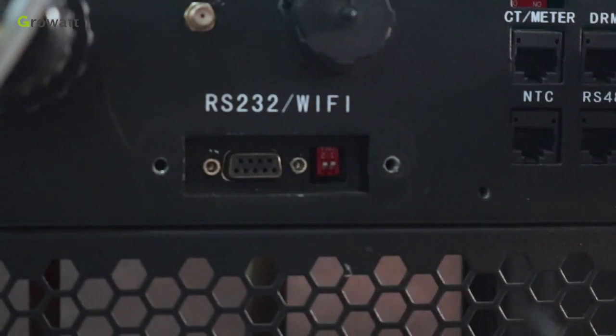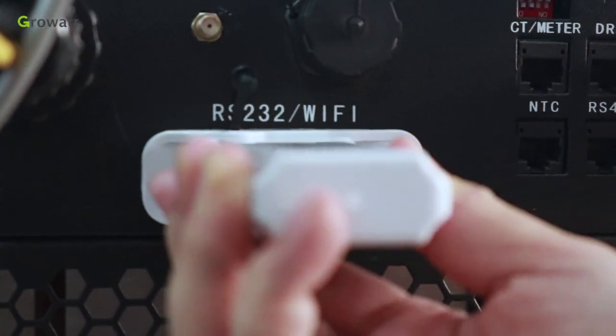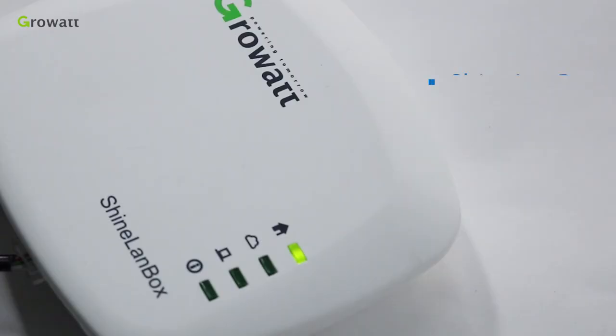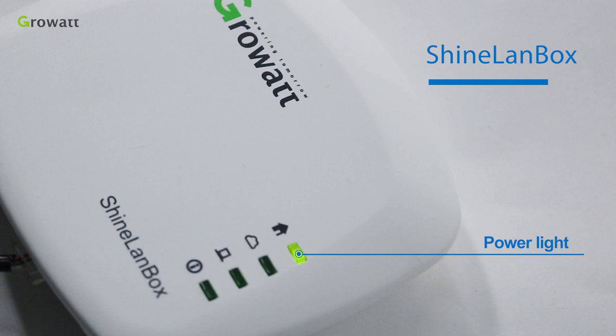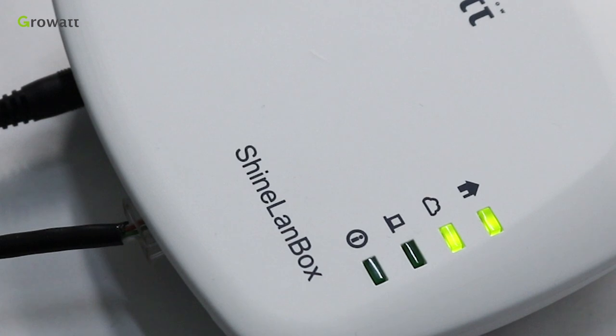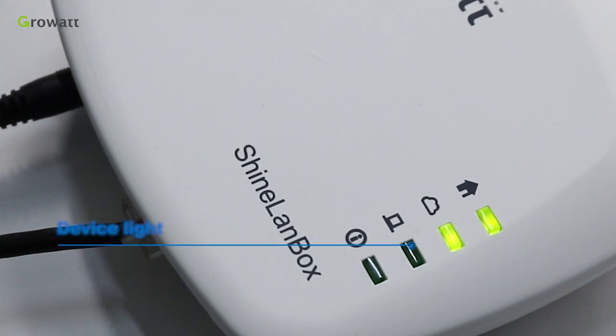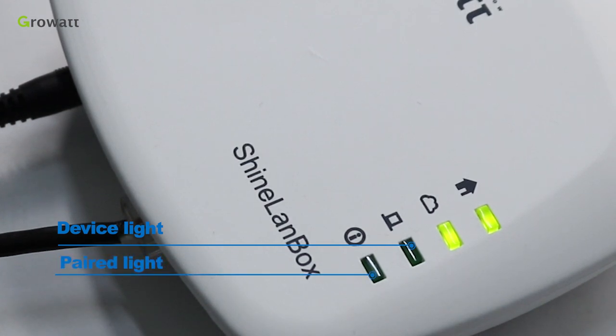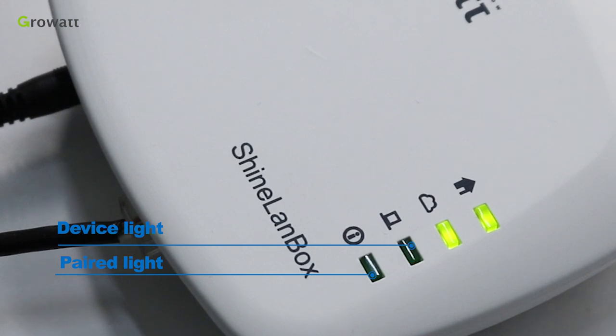For Shine Link, plug the Shine Link stick into the RS232 port and tighten it by screw. Power the Shine LAN box and use Ethernet cable connected to the router internet. When the web light is flashing means it's connecting to the router and being ON means its connection is successful. Shine Link has the function of automatic IP addressing. The Shine Link stick and Shine LAN box will connect automatically. The flashing device light means Shine Link is working.